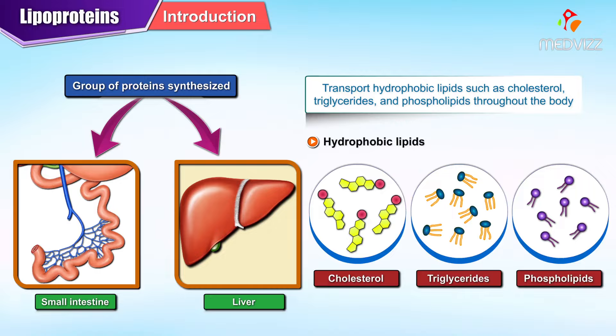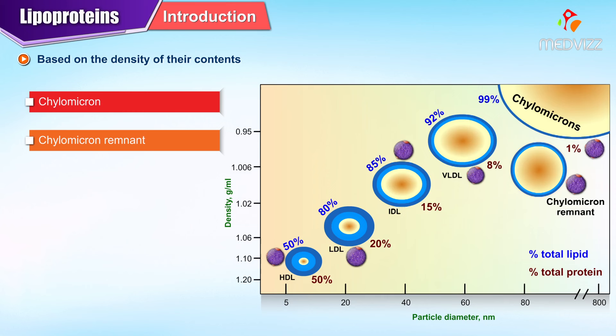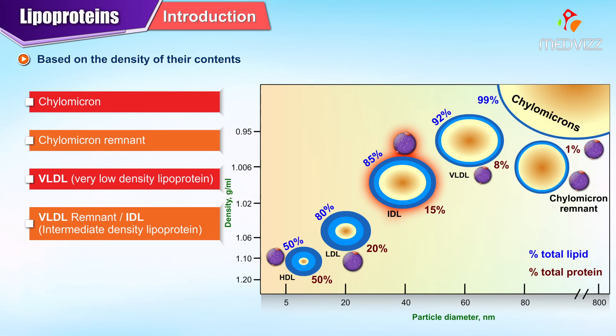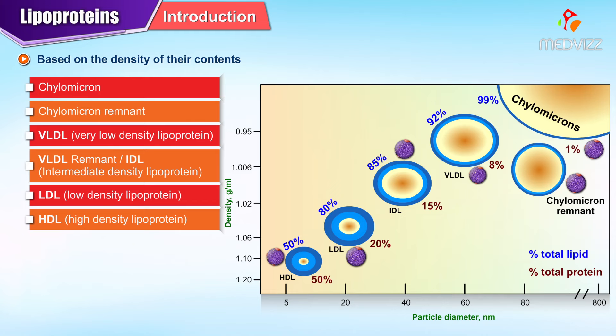Types are named based on the density of their contents and include chylomicron, chylomicron remnant, very low density lipoprotein or VLDL, VLDL remnant or IDL which is intermediate density lipoprotein, LDL which is low density lipoprotein, and HDL which is high density lipoprotein.